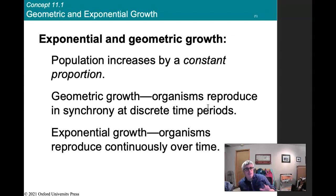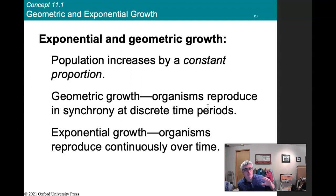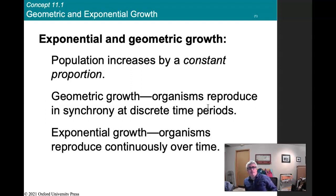The two main ways of thinking about population growth are exponential and geometric growth — where the population increases by a constant proportion, say 10% every year. There are some nuances in the equations between the two. In general we use exponential growth for most things, but geometric growth is for organisms that reproduce in synchronous or discrete time periods. The best example is birds — most nesting birds have young only once a year.